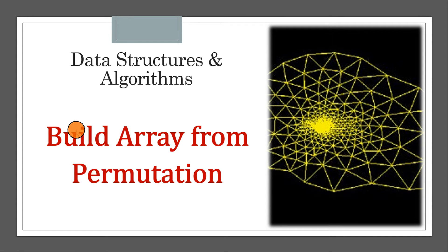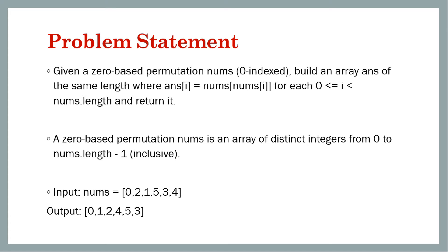Today we will solve a very simple problem based on arrays called Build Array from Permutation, taken from LeetCode problem number 1920. The problem statement says that you are given a zero-based permutation nums, which is the array you are given.